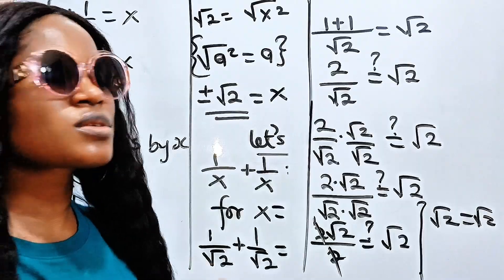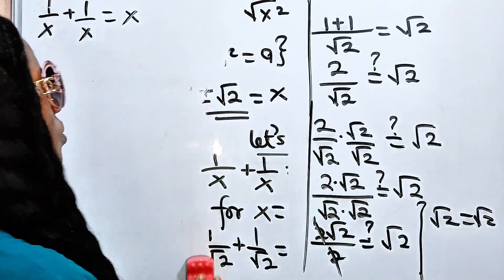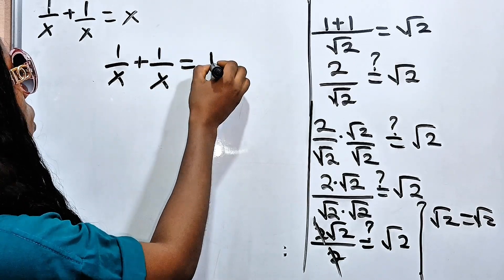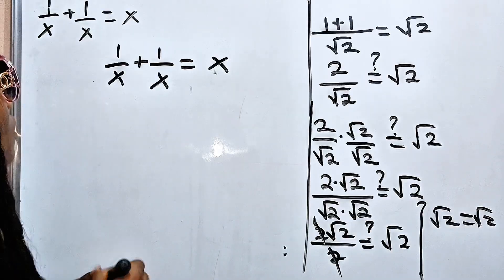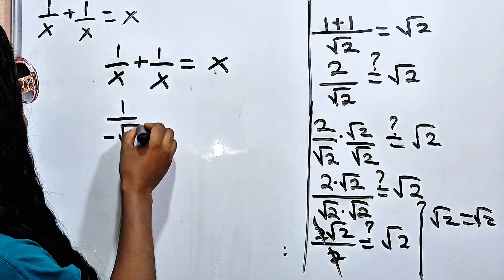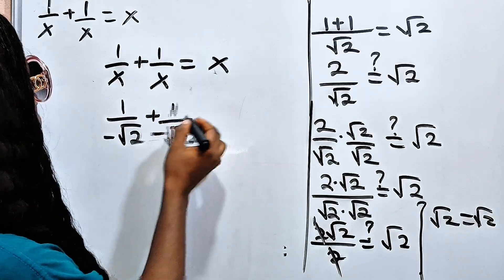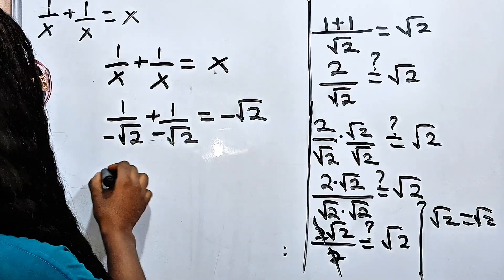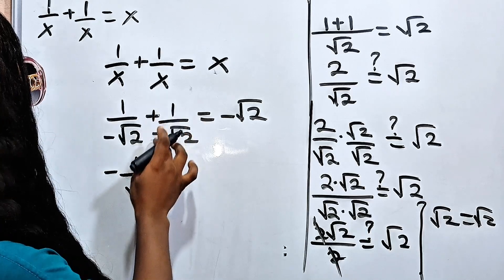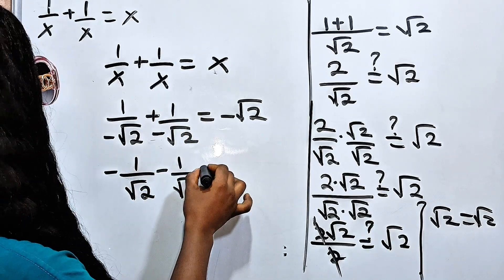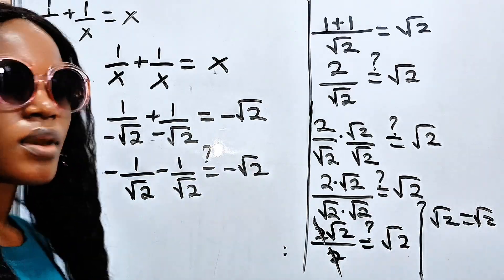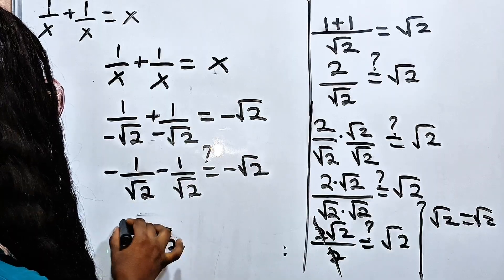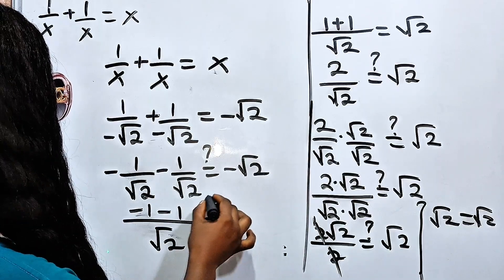Now let's see if negative root 2 is also a root of this equation. We have 1 over x plus 1 over x is equal to x, where x is minus root 2. So we have 1 over minus root 2 plus 1 over minus root 2 is equal to minus root 2. Now, 1 over minus root 2 is the same as minus 1 over root 2. So we have minus 1 over root 2 plus minus 1 over root 2. Is this equal to minus root 2?